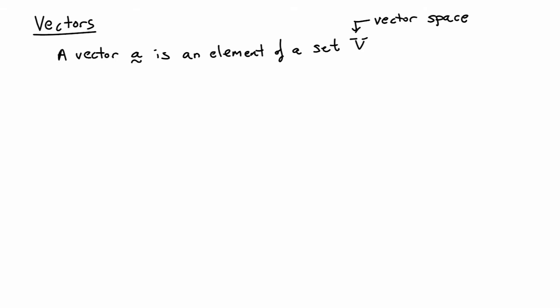One way of defining a vector is as an element of a set V, and V is called a vector space. You have a set and it contains certain elements, and those elements we call vectors. To technically call them vectors, the set V and the vectors that are elements of V need to satisfy certain properties. The first property is that if you take any two elements of the set and add them together, you can add them in the opposite order and still get the same element of V — so addition is closed and commutative.